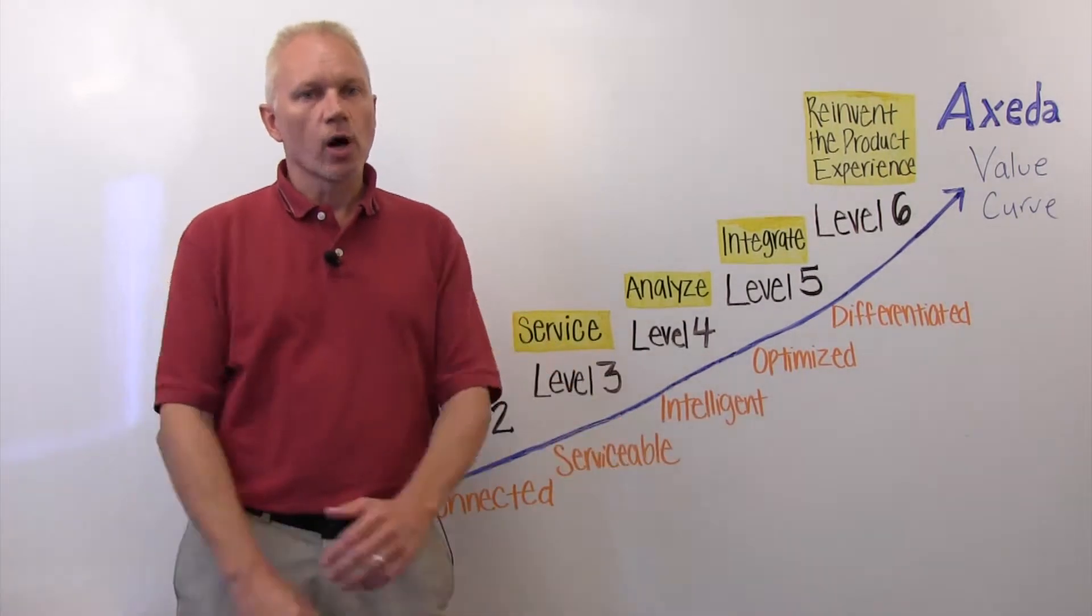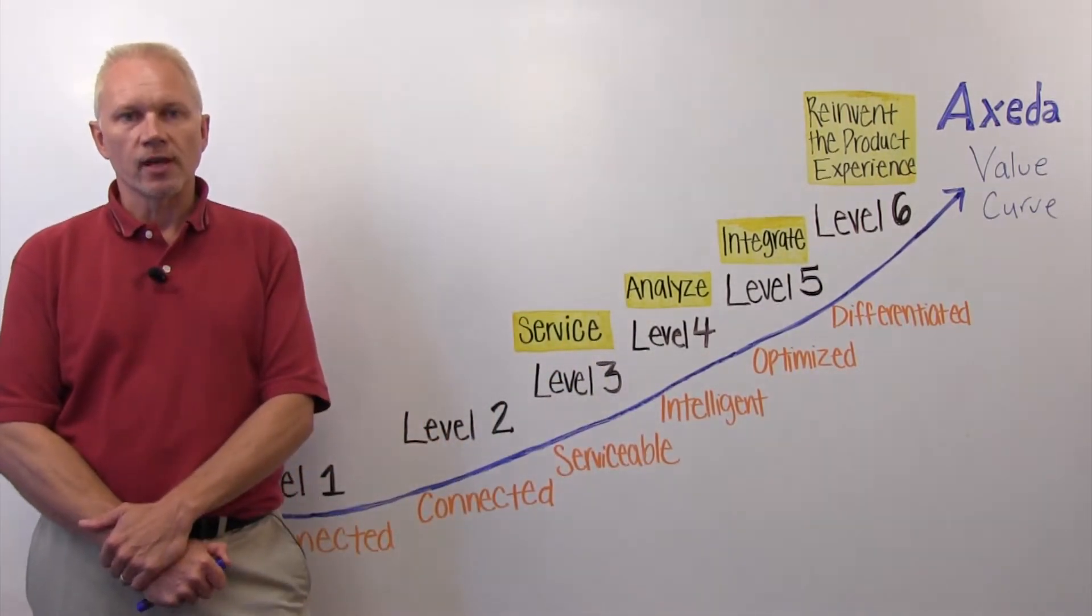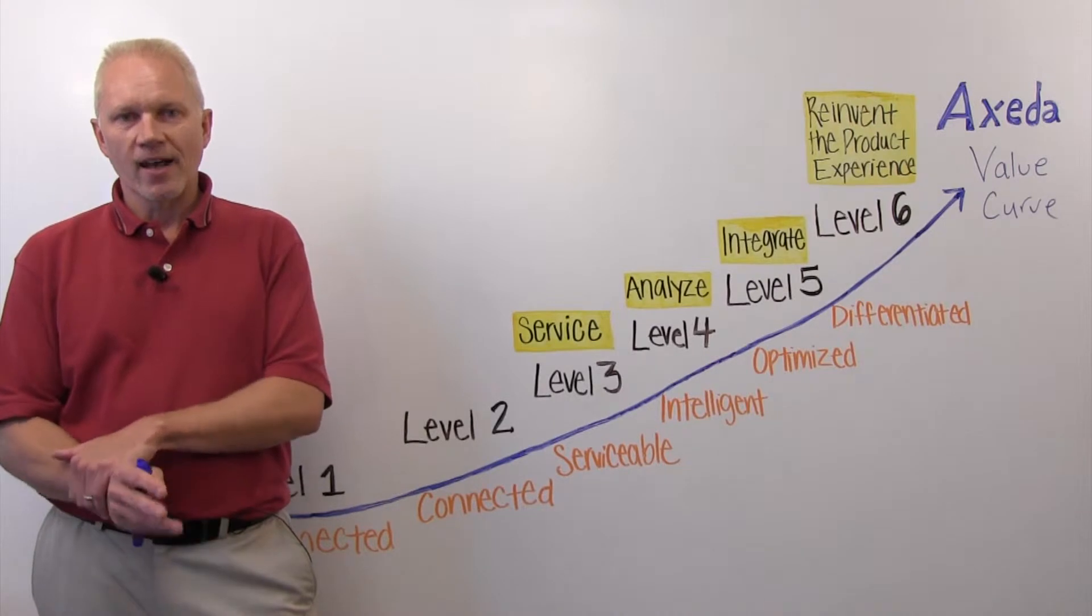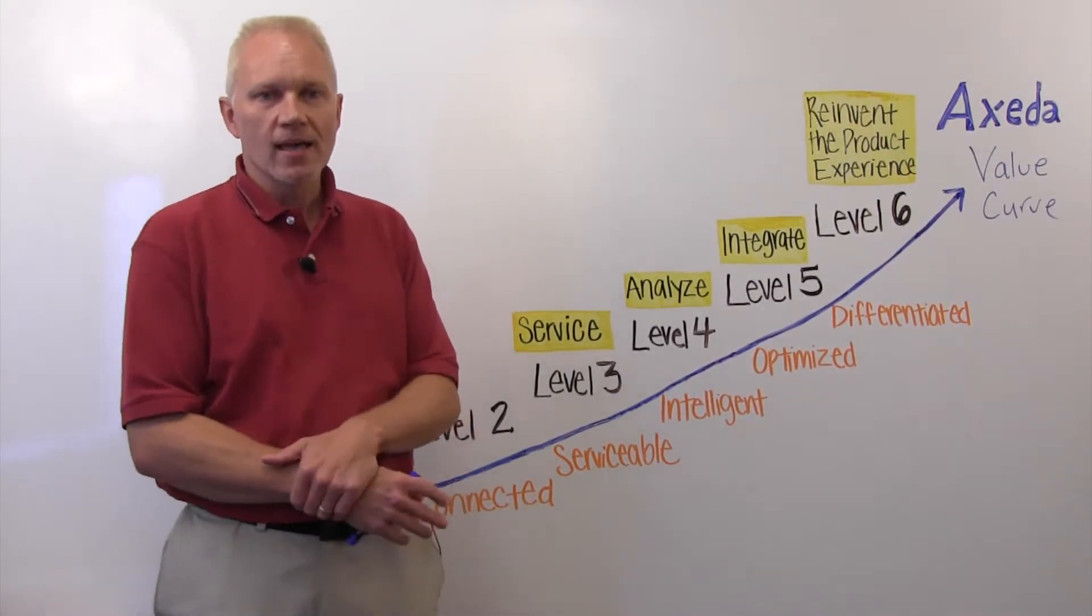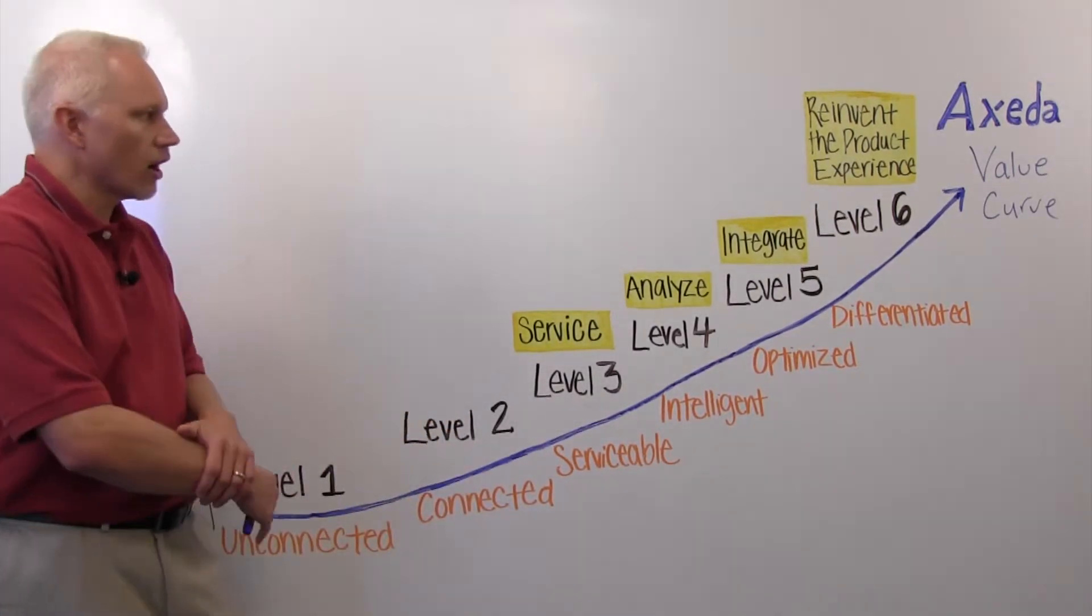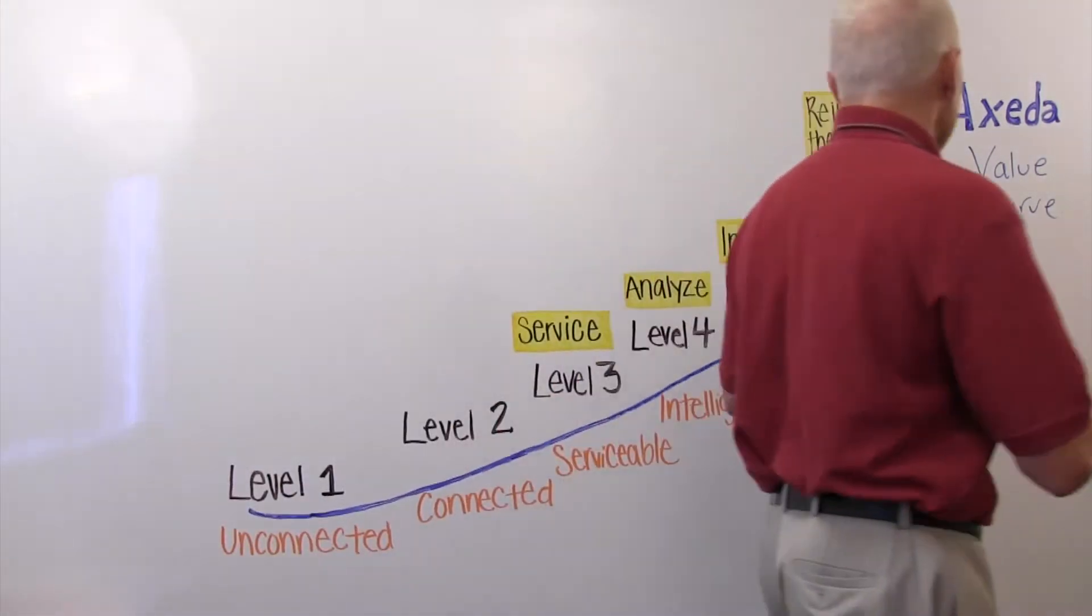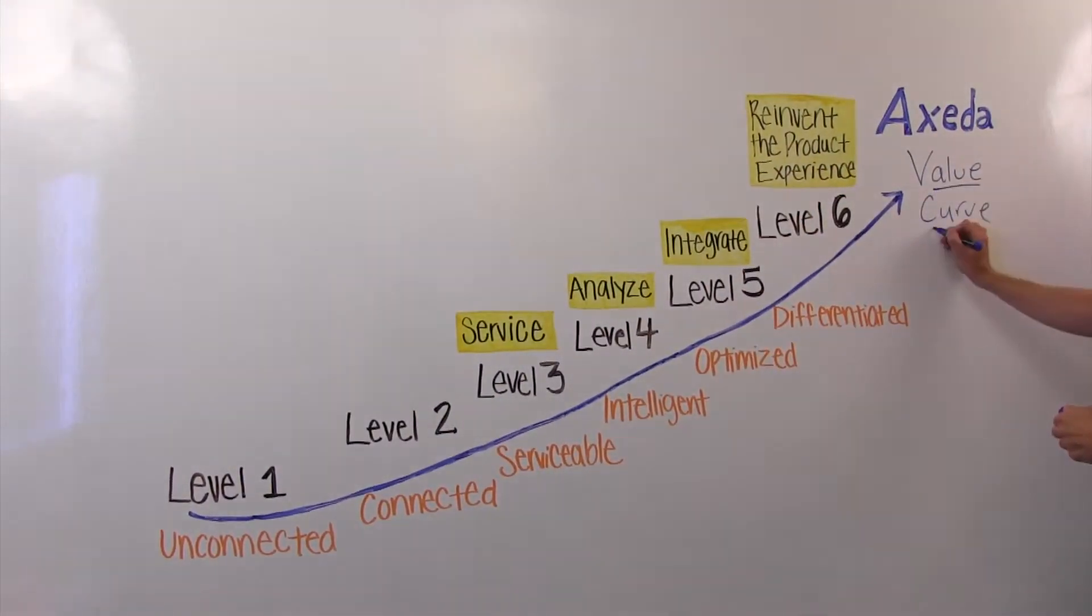But what is the value of machine-to-machine or Internet of Things? What is the return of that investment? What I'd like to talk about today is what we refer to as our value curve. The Axeda value curve shown here has six levels.